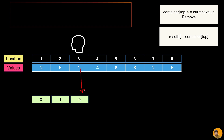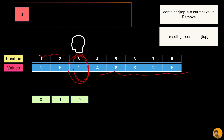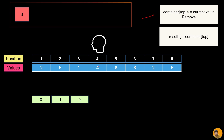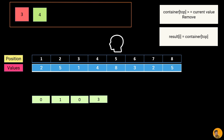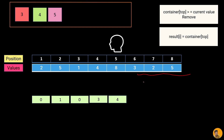Moving to position four with value four: container top is position three (value one). One is not greater than or equal to four, so we display position three and store position four. At position five with value eight: container top is position four (value four). Four is not greater than or equal to eight, so we display position four and store position five — because in future, a value like 100 might need it as an answer.